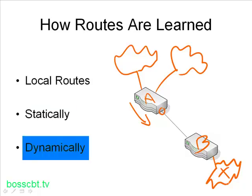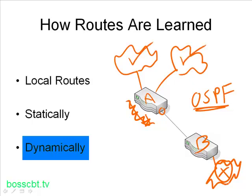That brings us to the dynamic approach — routes can be added to a router's route table dynamically. This is where routing protocols come into play. So let's say we didn't want to add a static route to router A. Instead, we configured both router A and router B with a routing protocol like OSPF. Now each router, by using this routing protocol, can exchange information dynamically. Router A, through OSPF talking to router B, would learn about the subnet on B. Likewise, router B would learn about the two subnets connected to router A. It's a dynamic conversation, with a lot less administrative overhead than configuring hundreds of static routes on each router.